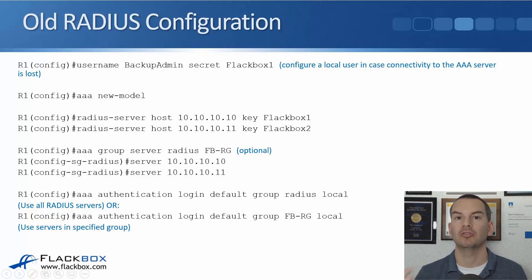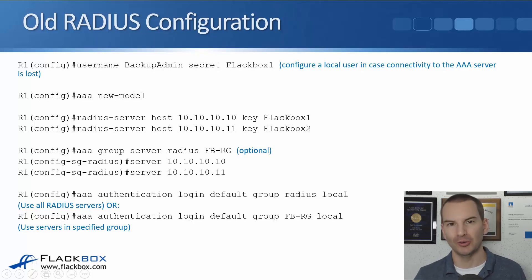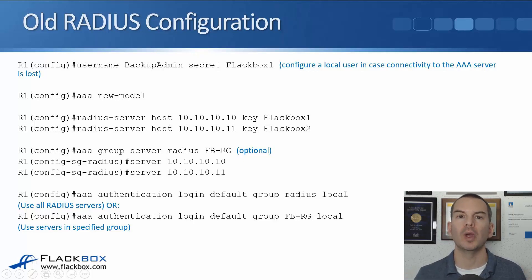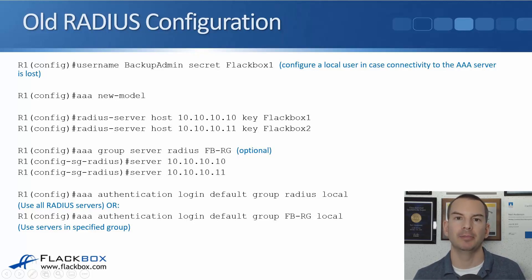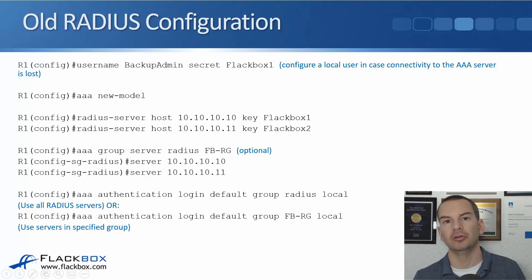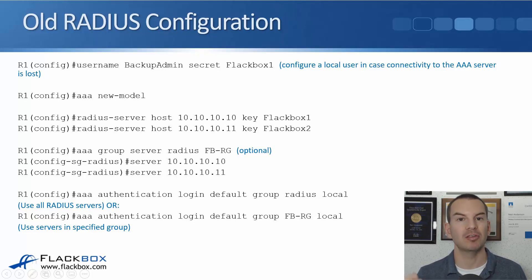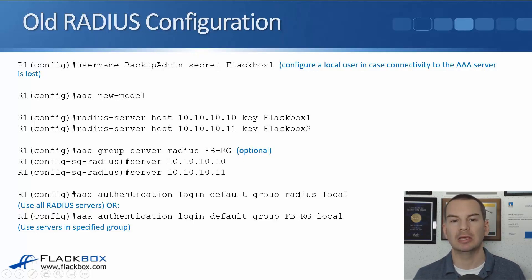For the rest of the AAA config, at global config we say 'aaa new-model' — there is no AAA old model command; this just means we're enabling AAA on this device. Then we configure where our AAA servers are. We're using RADIUS here, so we say 'radius-server host 10.10.10.10' and then 'key flackbox1'. You configure a matching password on the AAA server and on the router so they can use AAA with each other. For redundancy, we also configure a second server: 'radius-server host 10.10.10.11' with 'key flackbox2'.